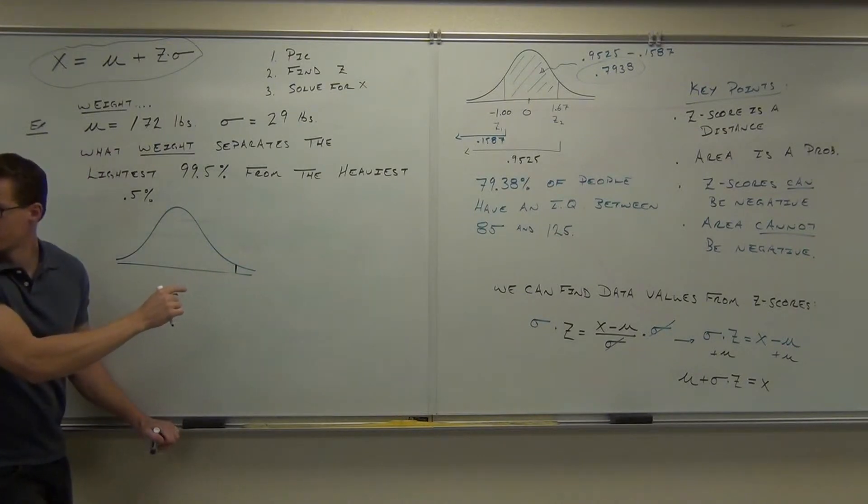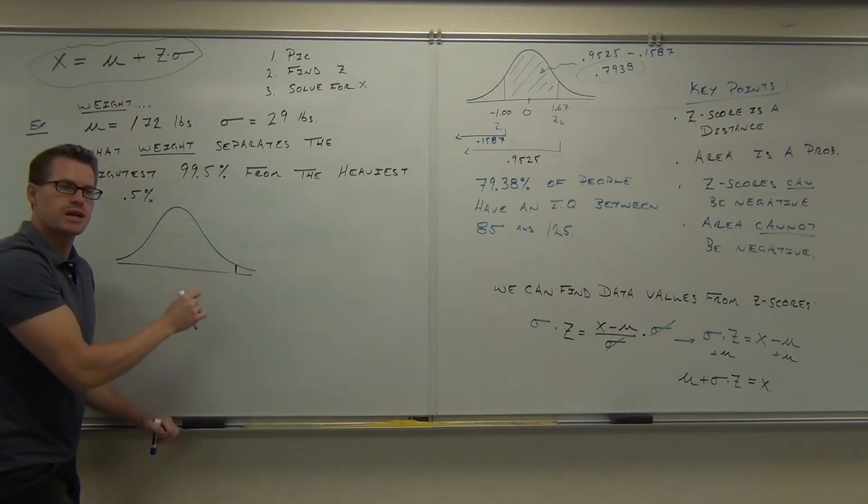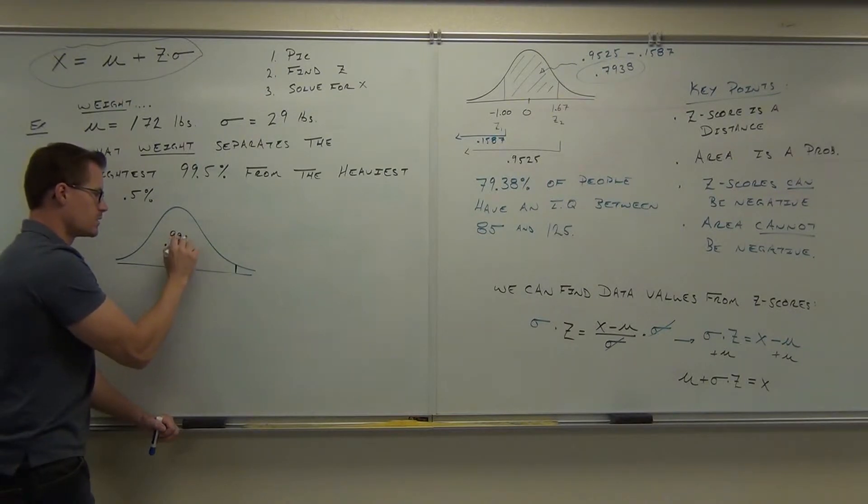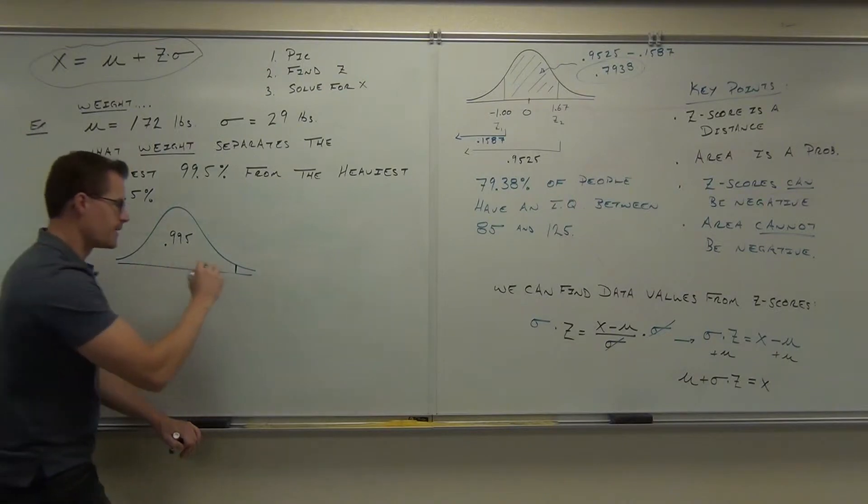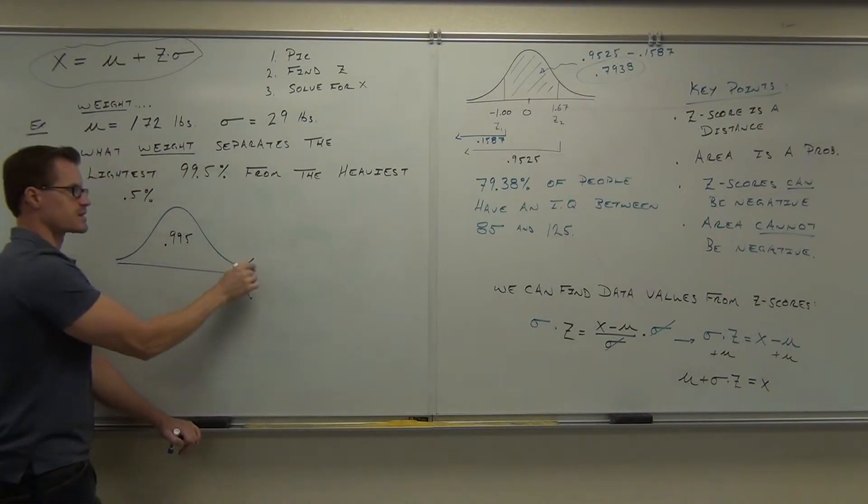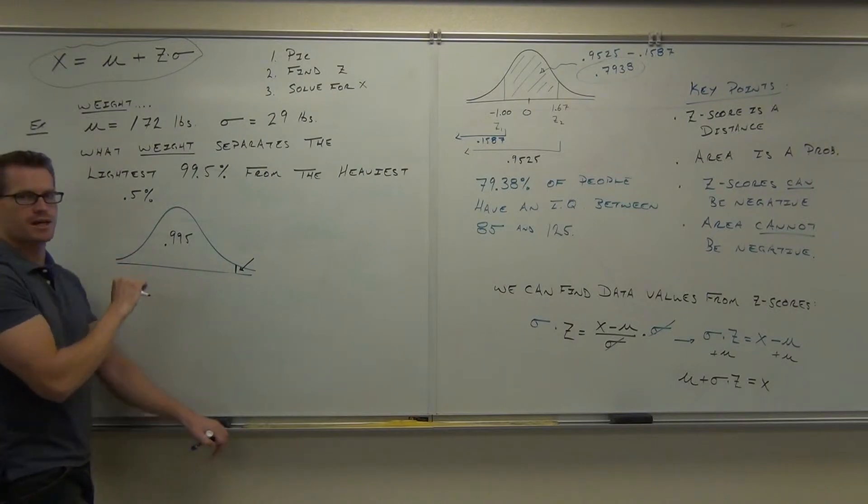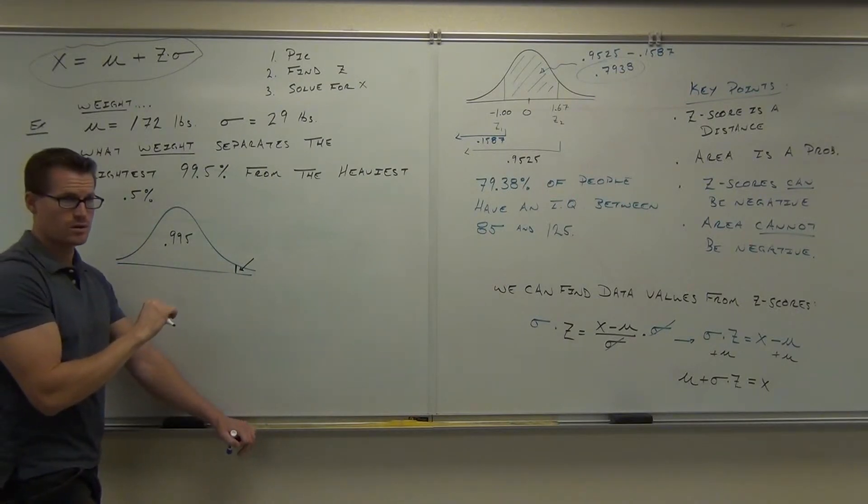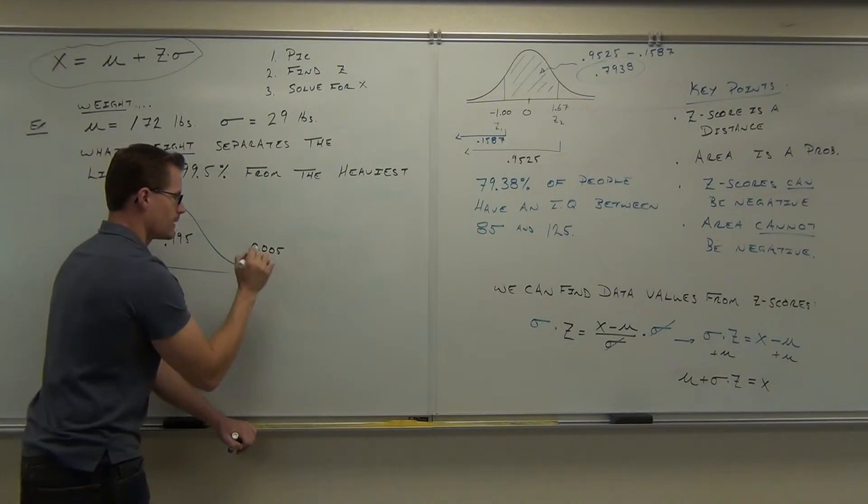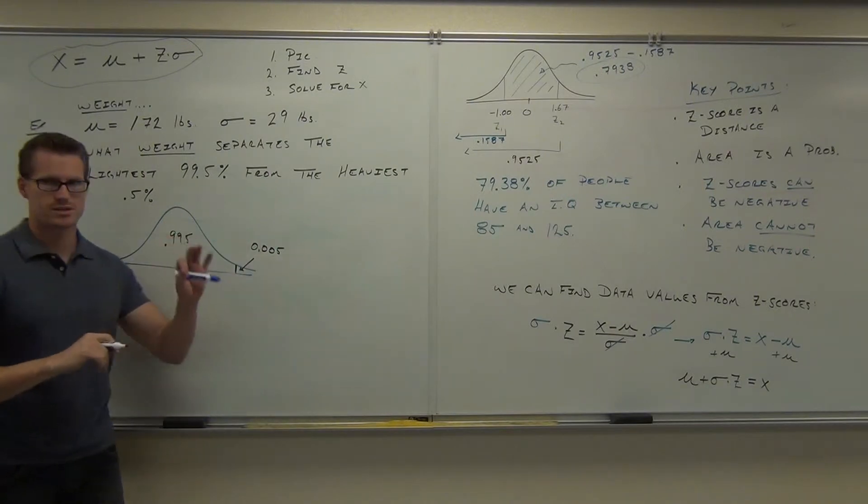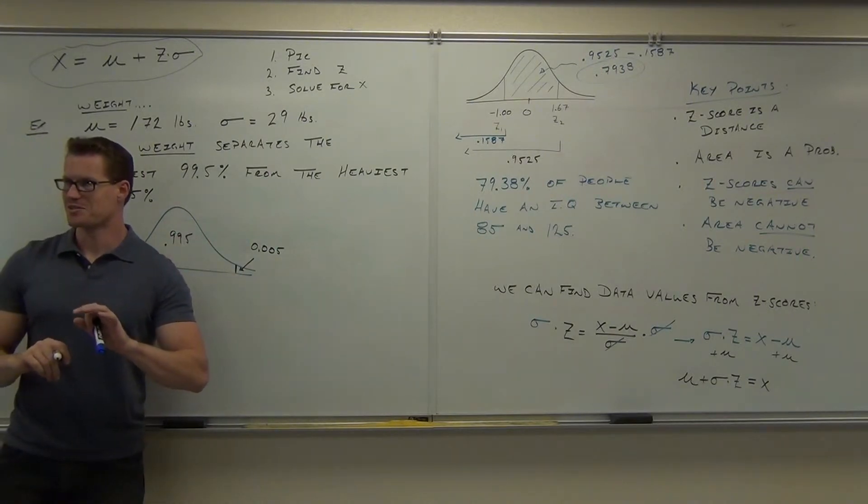Would you guys agree that this is the lightest 99.5% and this would be the heaviest 0.5%? Notice how those things are working together, right? Let's translate the percents now into a decimal. What's 99.5% as a decimal, please? This represents 0.995 as a proportion of the area. Okay, be careful. What is this? 0.5% as a decimal. 0.005. Good. I put 0.0 so you can see the point, but 0.005. Are you with me so far?